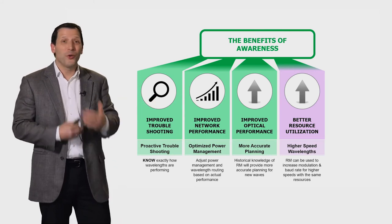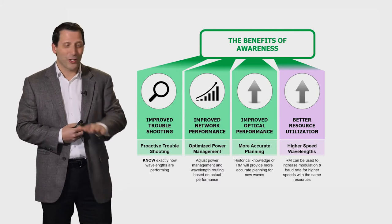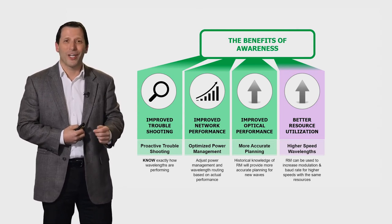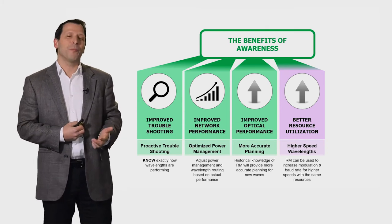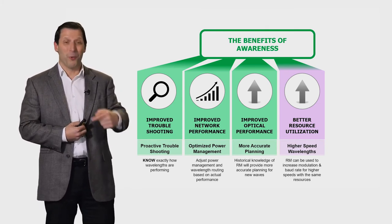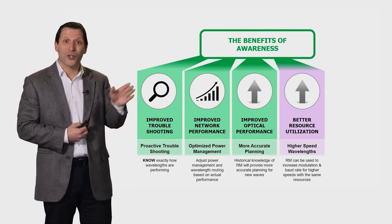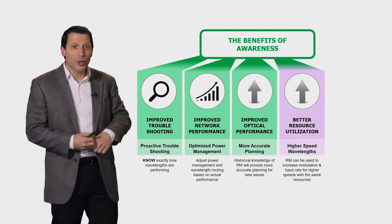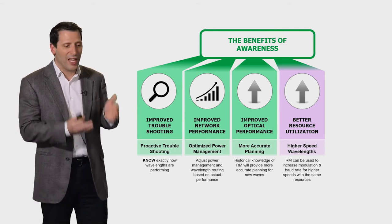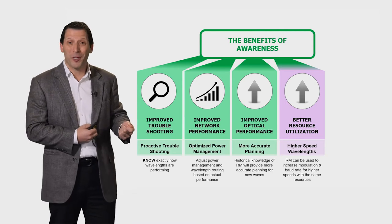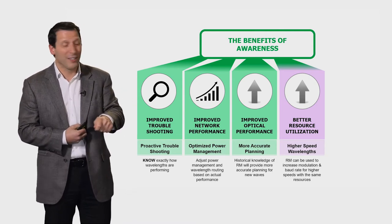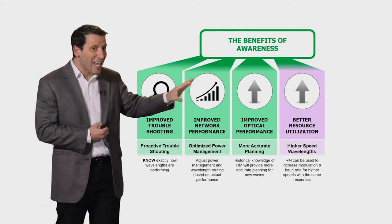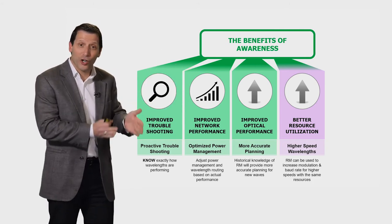Another big advantage is when you do optical mesh restoration — you're doing all these calculations on what the possible restoration paths are in the network. You typically do that the same way you plan traditional wavelengths, based on end-of-life estimations. But restoration paths don't need to exist for very long — ultimately you want to get back to your original path. So when you have a failure and you're looking for potential restoration paths, you can use the actual understanding of real-time residual margin measurements to vastly increase the number of potential paths in the network, because that path doesn't need to live till end of life. You only need to use it for a short period of time, so you only care about current values.